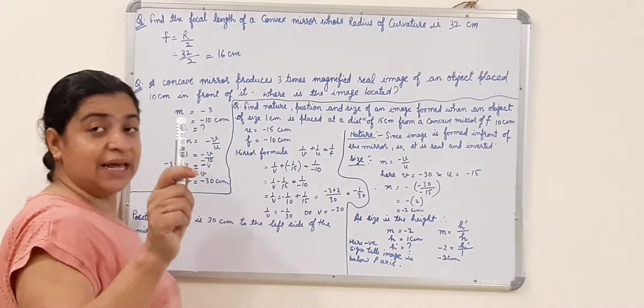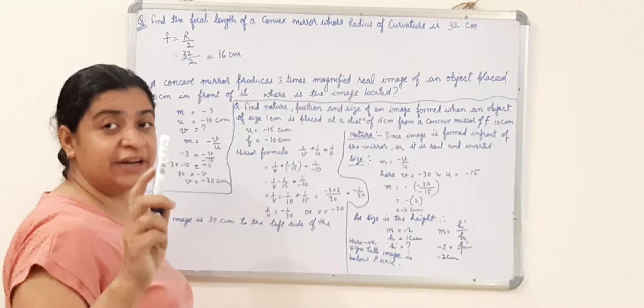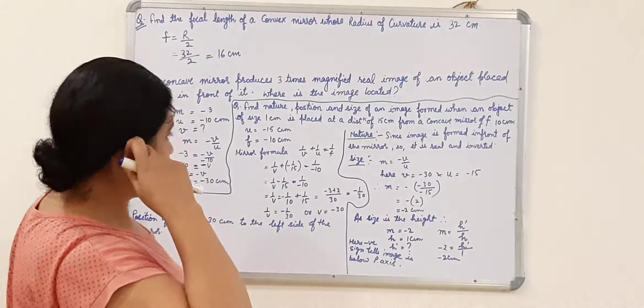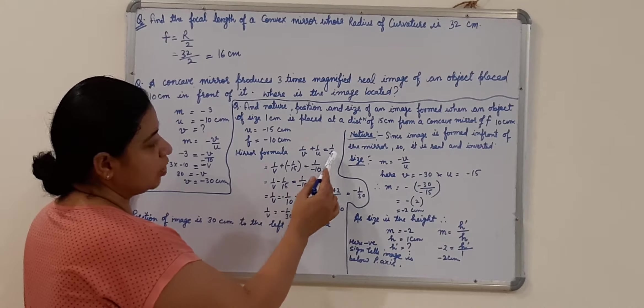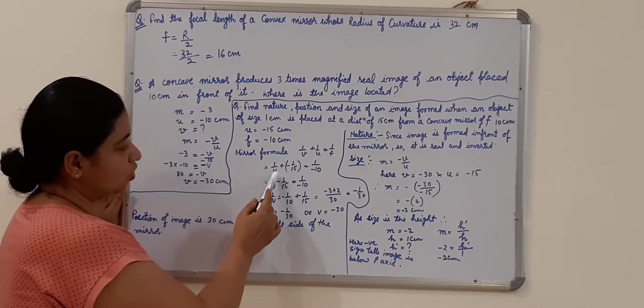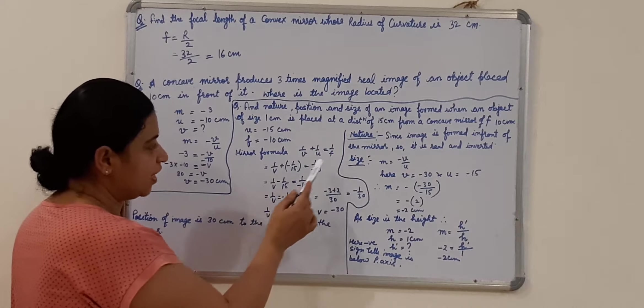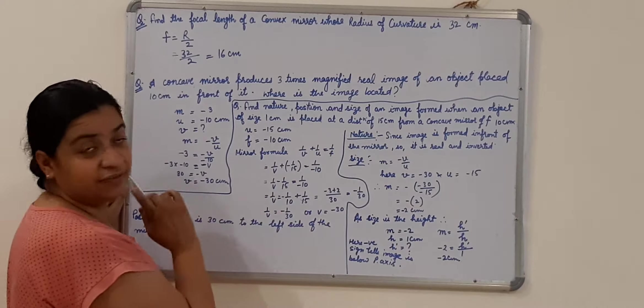But in one case, when the image formed is virtual and erect, in that case we are going to take it as positive. Mirror formula: 1 upon V plus 1 upon U is equals to 1 upon F. We know the value of U and F, we can find out the value of V.